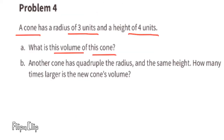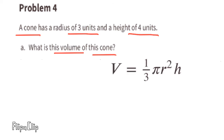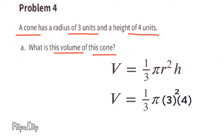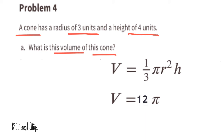Problem number four: a cone has a radius of 3 units and a height of 4 units. Part a: what is the volume of this cone? The formula is volume equals one-third times pi times r squared times height. Substituting radius 3 and height 4: volume equals one-third times pi times 3 times 3 times 4. Because order doesn't matter in multiplication, this is one-third times 3 times 3 times 4 times pi, which equals 12 pi. The volume of this cone is 12 pi.